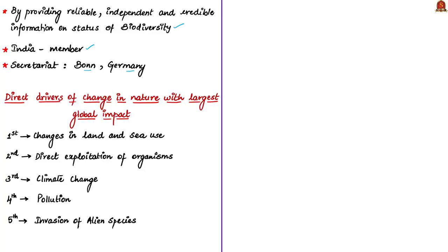The summary describes the direct drivers of change in nature with the largest global impact. Land-use change and sea-use change have had the largest relative negative impact on nature since 1970, followed by direct exploitation or over-exploitation of animals, plants and other organisms, then climate change, pollution and invasion of alien species. Agricultural expansion is the most widespread form of land-use change. The expansion of agriculture inland, a doubling of urban areas since 1992, and an unprecedented expansion of infrastructure linked to growing population and consumption has come mostly at the expense of forests, wetlands and grasslands.